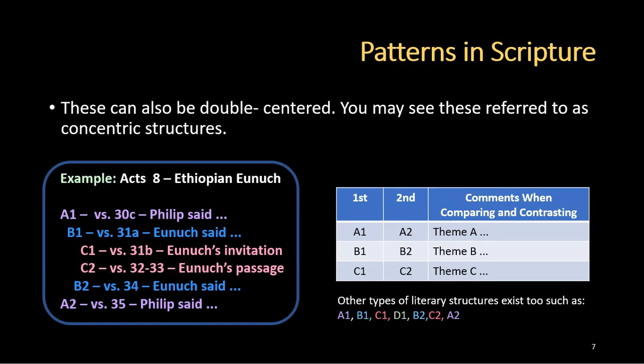These can also be double-centered — you may see these referred to as concentric structures. An example of this is Acts 8, where we have the account of the Ethiopian eunuch. A1 is verse 30c, where Philip said something. B1 is verse 31a, where the eunuch said something. C1 is verse 31b, where the eunuch makes his invitation to Philip. C2 is verses 32-33, which is the eunuch's passage. B2 is verse 34, where the eunuch said something again. And A2 is verse 35, where Philip said something. In the chart, the first column has A1, B1, C1; the second column has A2, B2, C2; and we make our comments in the third column for each theme.